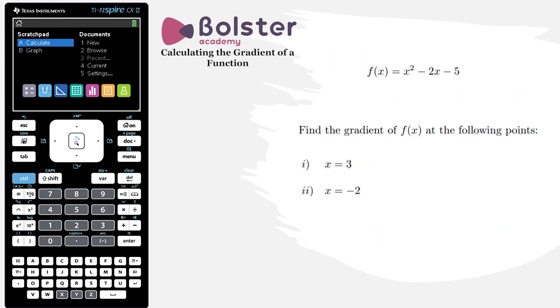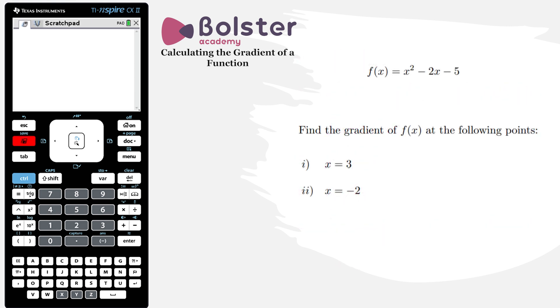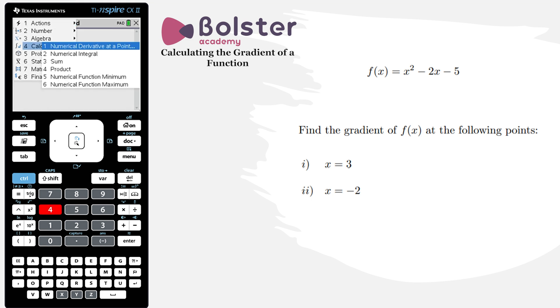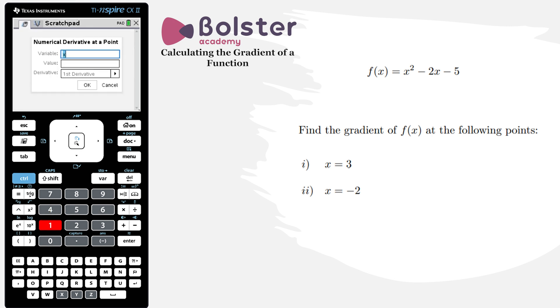Okay, so we're just going to hit scratch pad, go into the menu, and choose option number four, calculus. Within the sub menu we're going to choose option number one, numerical derivative at a point, and now up pops this dialog box where we have to fill in some information.